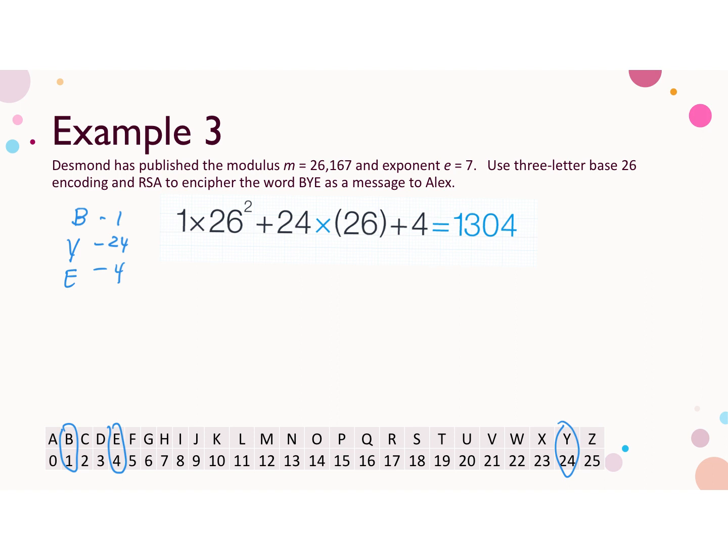Next we want to encrypt that using the RSA algorithm. To do that, we're going to take that message, 1304, we're going to raise it to the 7th power, and then we want to reduce it mod 26,167. These numbers get very large quickly, so you may not be able to use your calculator for it, and we may need to use Mathematica.